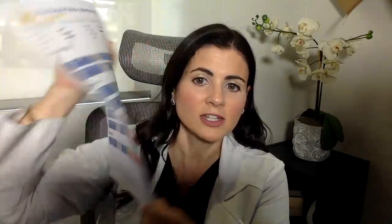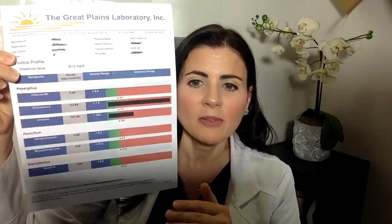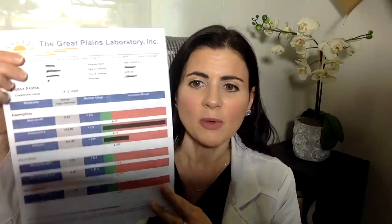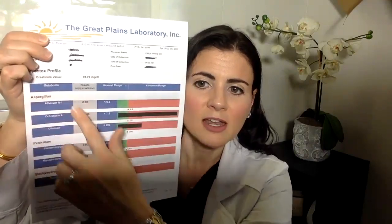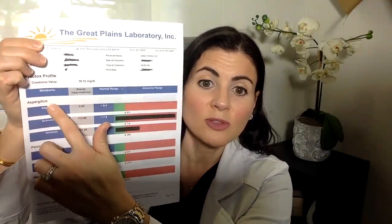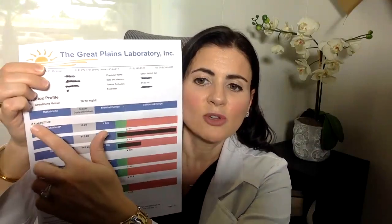There are different metabolites for each different type of mold. In this example, this person is definitely exposed to the mold aspergillus because they have very high levels of ochratoxin A and moderate levels of gliotoxin. Aspergillus exposure can come from water-damaged buildings, but it can also come from certain foods, especially with ochratoxin A.